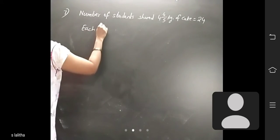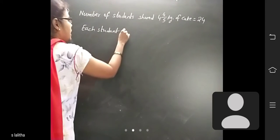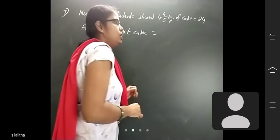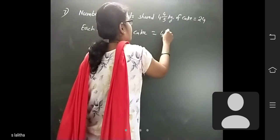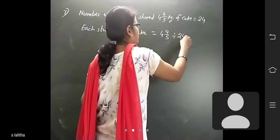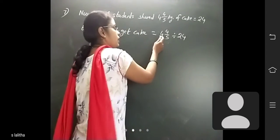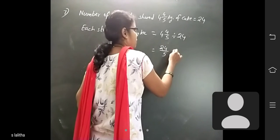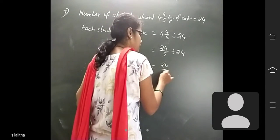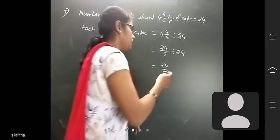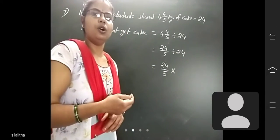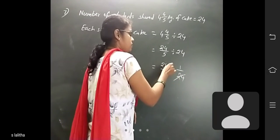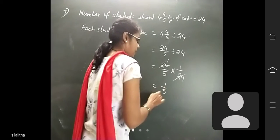Each student's share of cake equals 4 and 4/5 divided by 24. Convert the mixed fraction: 5 × 4 = 20, 20 + 4 = 24, so it becomes 24 by 5 divided by 24. Converting division into multiplication, 24 becomes its reciprocal — 1 by 24. Now 24 and 24 cancel, giving 1 by 5 as the answer.